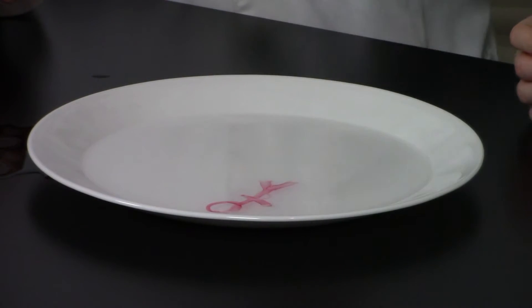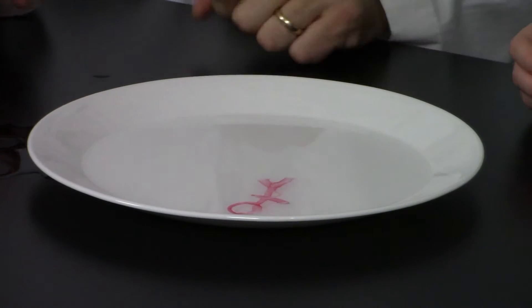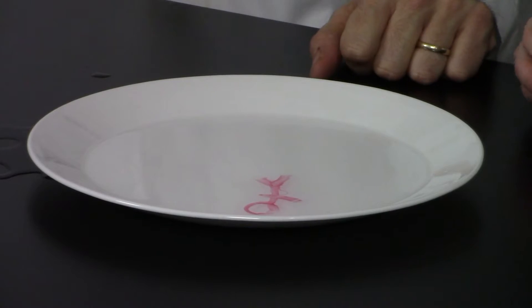The Expo dry erase marker ink is insoluble, which means it won't dissolve in a liquid. When water is added to the plate, a strong buoyancy force forces the drawing from the plate.